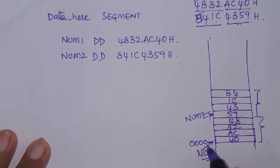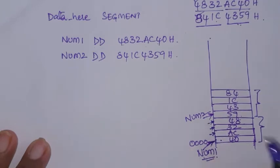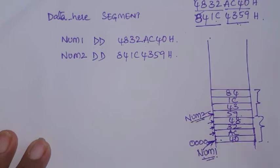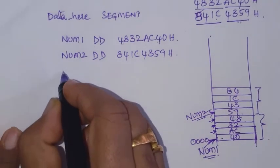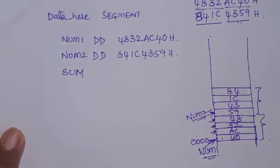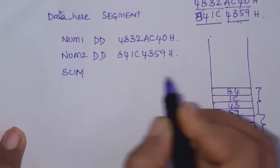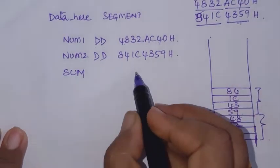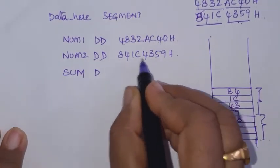The name of this location is num1. You can access the next location as num1 plus 1, the next as num1 plus 2, and this is num1 plus 3. The name of this location is num2. Now we reserve space for the result — 'sum'. We can assign memory for the result. The result will be more than 32-bit — it is a double word.